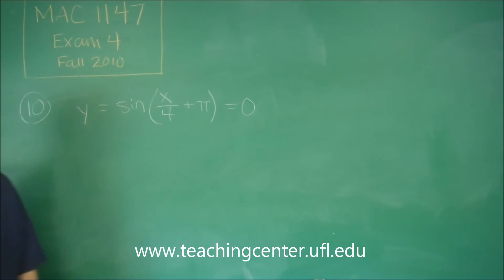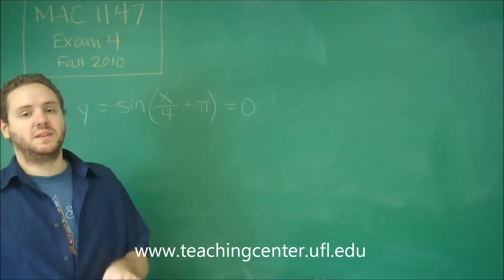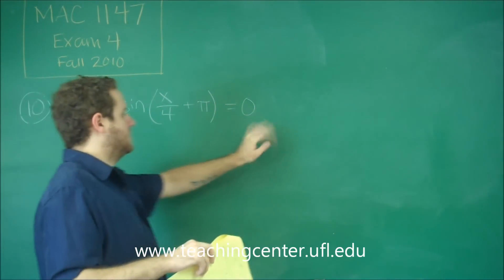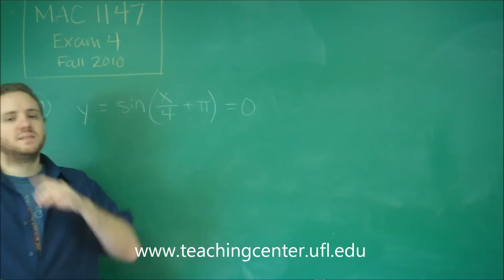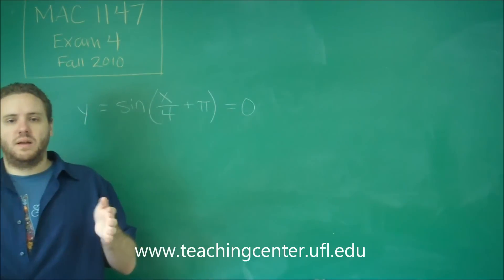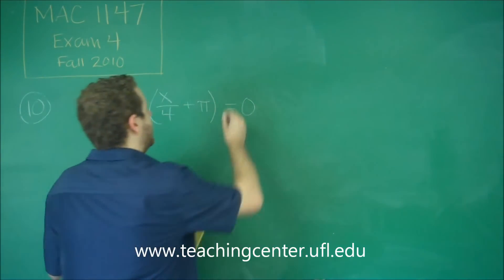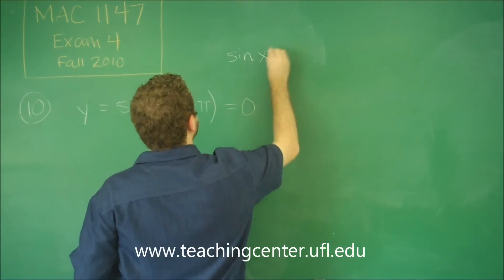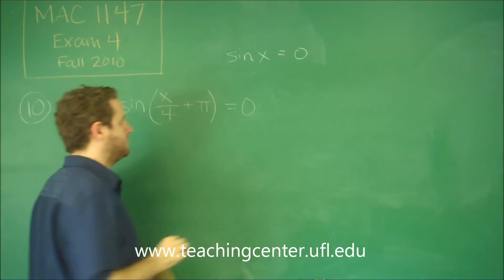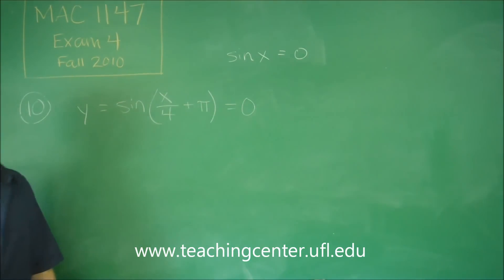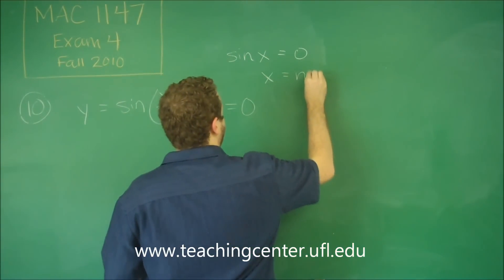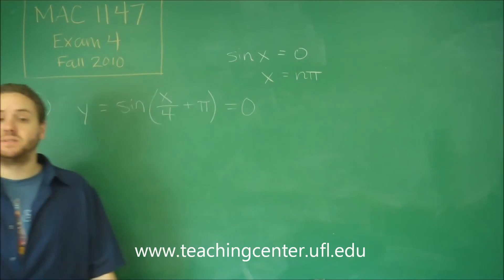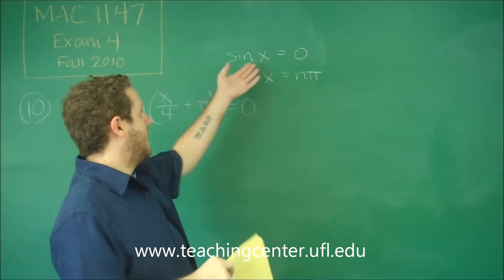We just need to do a couple of logic steps before we get to the actual algebra. We want sine of something to equal 0, so first ask yourself: when is the sine function 0 at all? If you just had sine x equals 0, that's true where x equals n pi — any multiple of pi, including 0, makes sine of x equal 0.